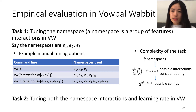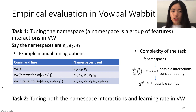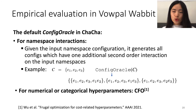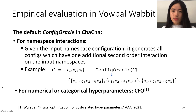Another task we tested is to tune both namespace interactions and the learning rate, which is a numerical hyperparameter. We provide a default implementation of the Configuration Oracle for the two types of hyperparameters considered in our evaluation. For the namespace interaction problem, we realize the Configuration Oracle in the following way: given the input namespace interaction configuration,